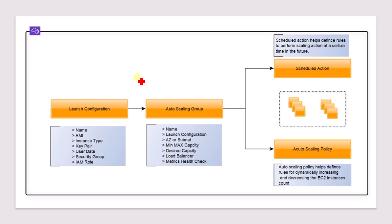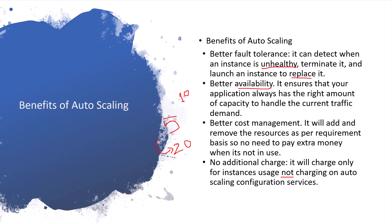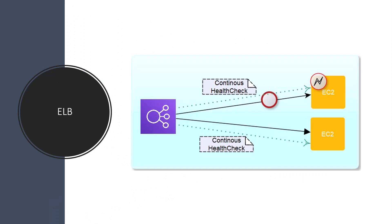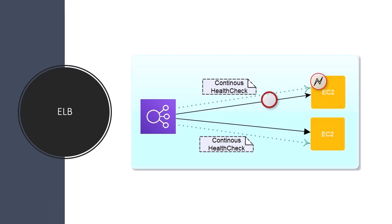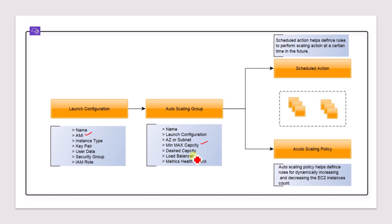In more detail, auto scaling uses a launch configuration where we specify the AMI — as mentioned in the question — along with instance type, key pair, user data, security group, and IAM role. Then the auto scaling group references the launch configuration and you can configure it for multiple availability zones with minimum and maximum capacity. You also provide information about the load balancer since auto scaling works together with it, and you configure the health check matrix.